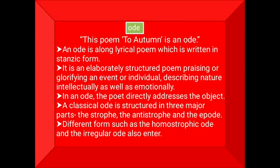Then we come to some characteristics of this poem. This poem is an ode. An ode is a long lyrical poem written in a stringent form. It is an elaborately structured poem praising or glorifying an event or individual, describing nature intellectually as well as emotionally. In an ode, the poet directly addresses the object. A classical ode is structured in three major parts: the strophe, the antistrophe, and the epode. Different forms such as the homostrophic ode and the irregular ode also exist.